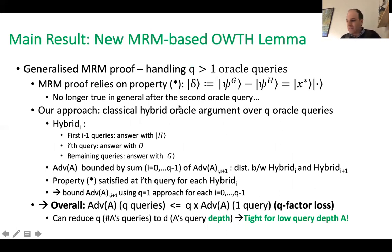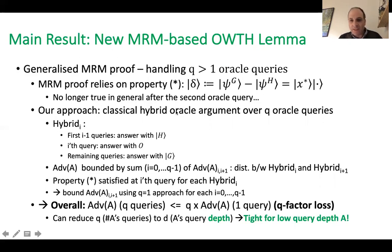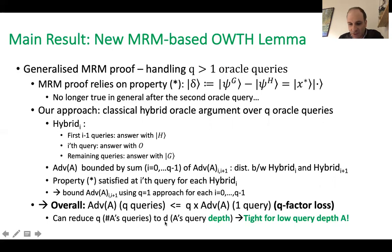This was derived for one oracle query. We generalize it to handle any number Q of queries using classical hybrid techniques over the Q oracle queries, reducing the advantage of A with Q queries to the one-query case up to a multiplicative factor of Q. We also observe that this multiplicative factor can be reduced to D, the query depth of the attacker, so that for highly parallelized attackers, only the sequential depth matters. Our reduction is nearly tight for low query depth attackers.